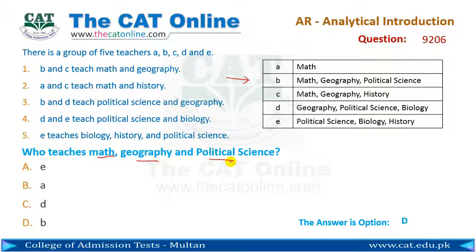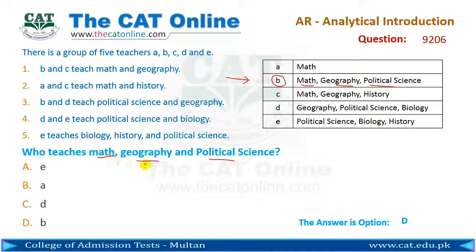The question asks who teaches Math, Geography, and Political Science. From the table, teacher B teaches Math, Geography, and Political Science — which is what the question asked. This is given in option D, so the correct answer to this question is option D.